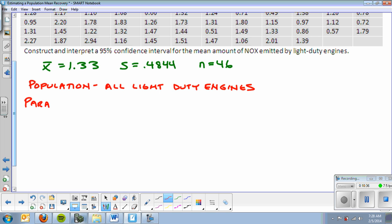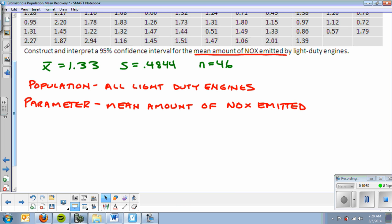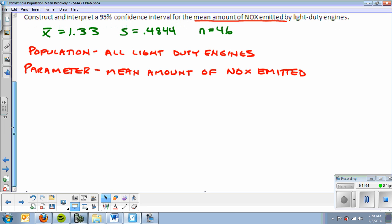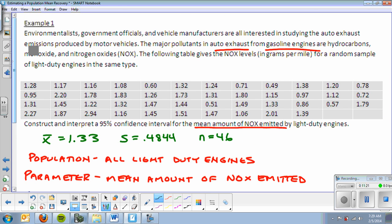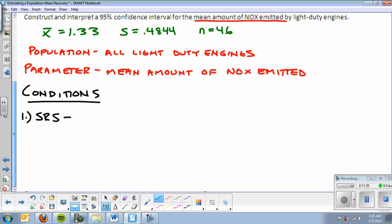Now we are going to construct and interpret. The first thing I want to do is identify the population. The population is all light-duty engines. That's what I'm getting information about, auto exhaust from gas engines. The parameter of interest in this case, what am I getting information about? What am I estimating right here? The mean amount of NOx emitted. The true mean amount, which I don't know because I have to go find every single engine and figure out the NOx emitted.